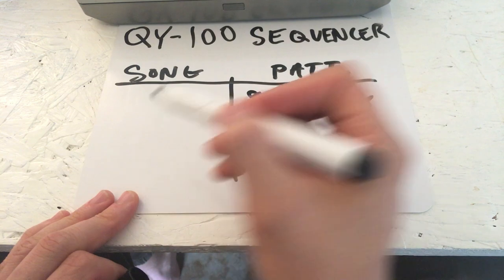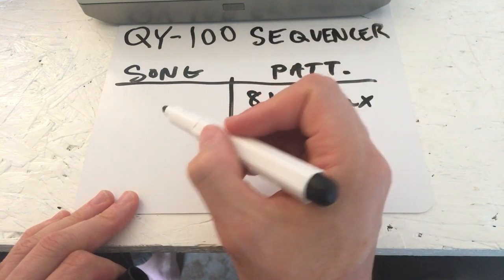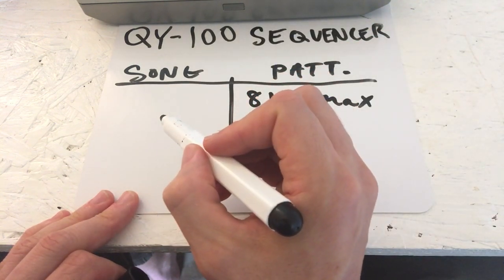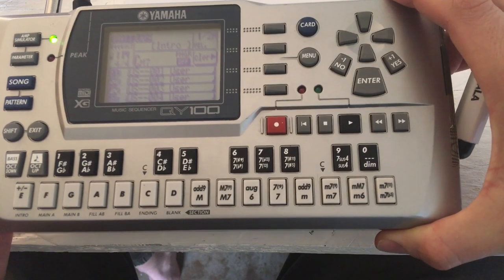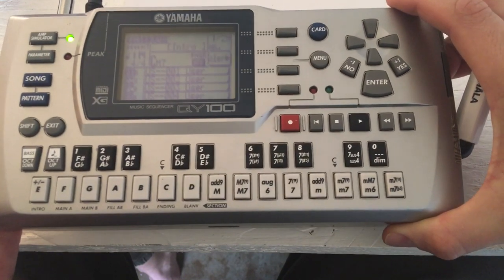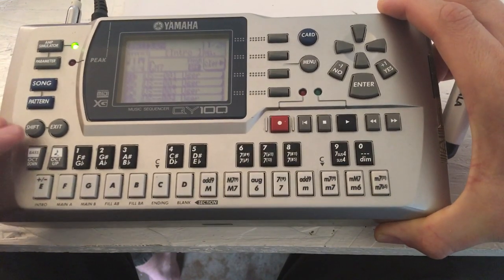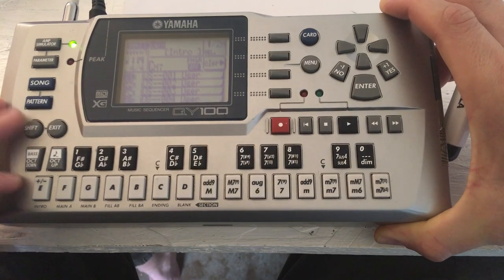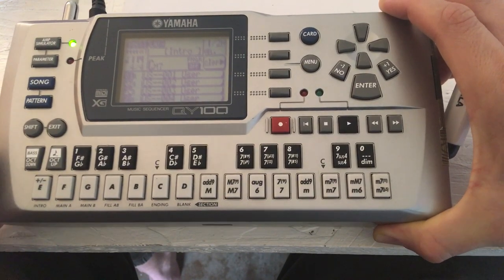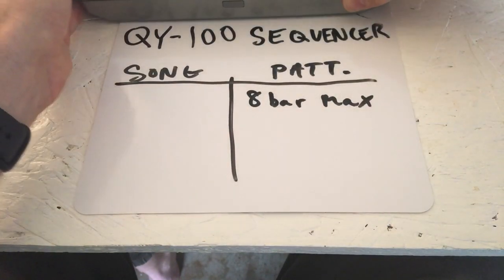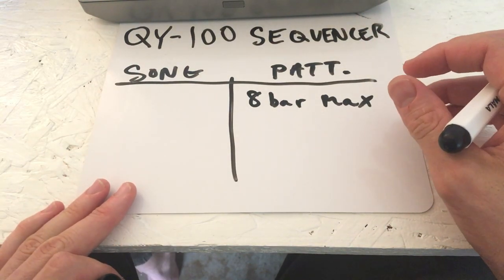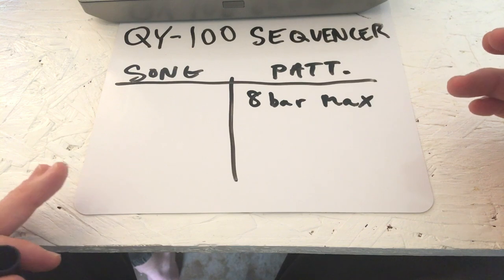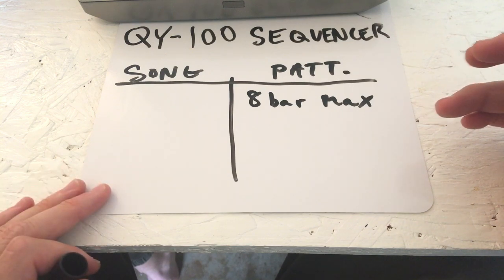Memory capacity depends on how much CC information and stuff like that. With the QY, there's no CC information you can do other than the mod wheel, which is actually a mod button. But you can draw curves and stuff like that using CC, and in fact you can do some stuff that's very hard to do with hardware controllers. We'll get to that later.